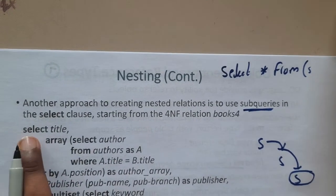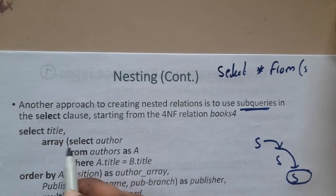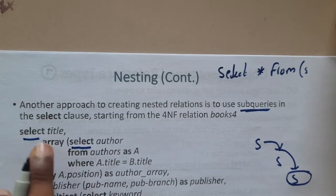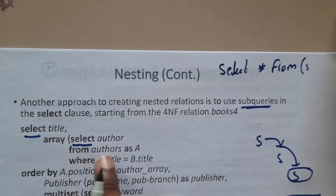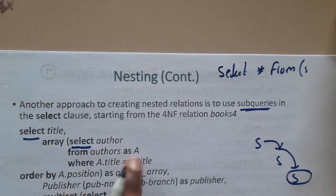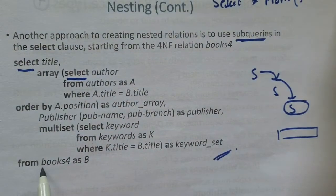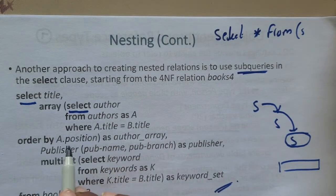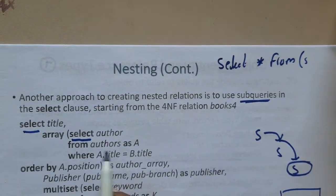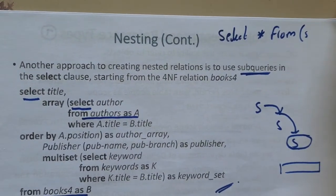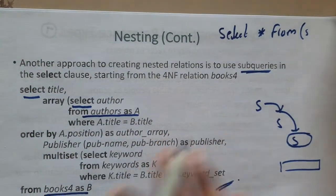So here we have SELECT title, then an array of another SELECT — you are selecting something else inside. Just by observing, you can say it is a sub-query. Inside this outer query, there is an inner query: SELECT author FROM authors AS a WHERE a.title = b.title ORDER BY position. Here, 'a' and 'b' are two different tables — 'b' is books and 'a' is authors. So authors table is aliased as 'a' and books as 'b'.